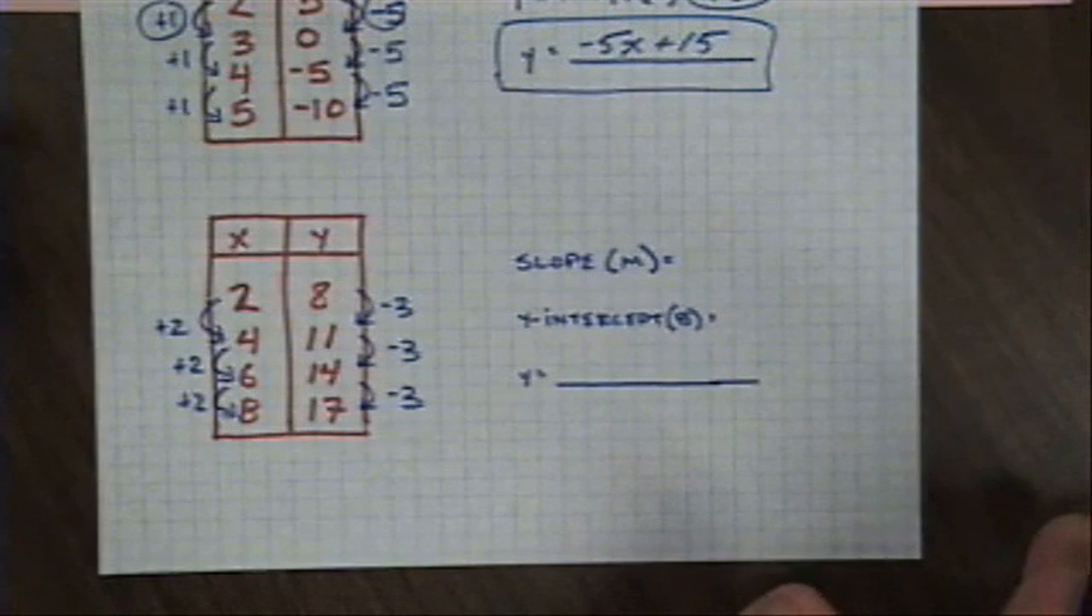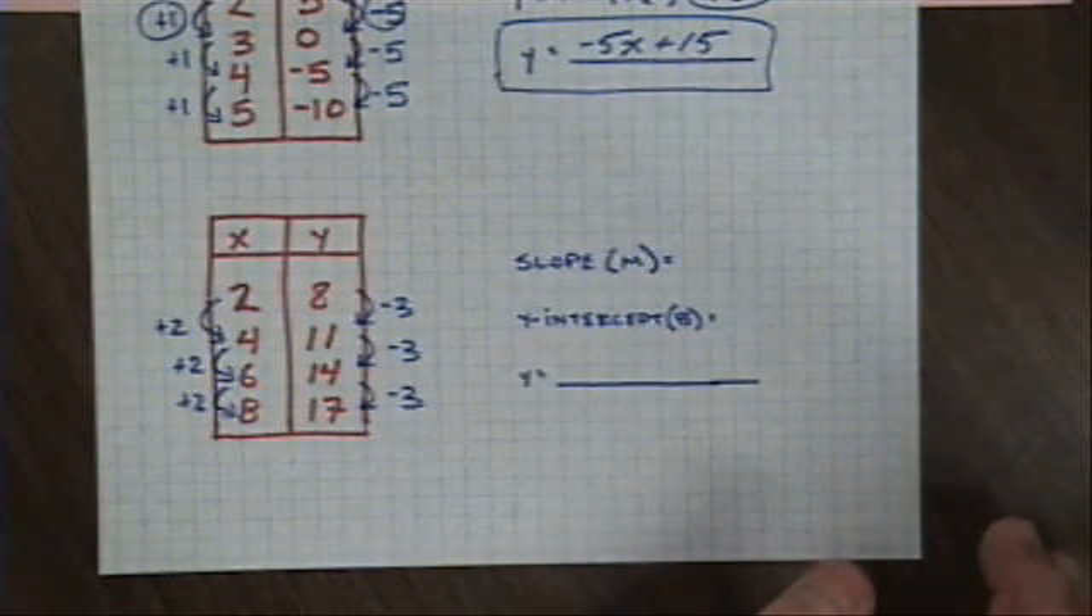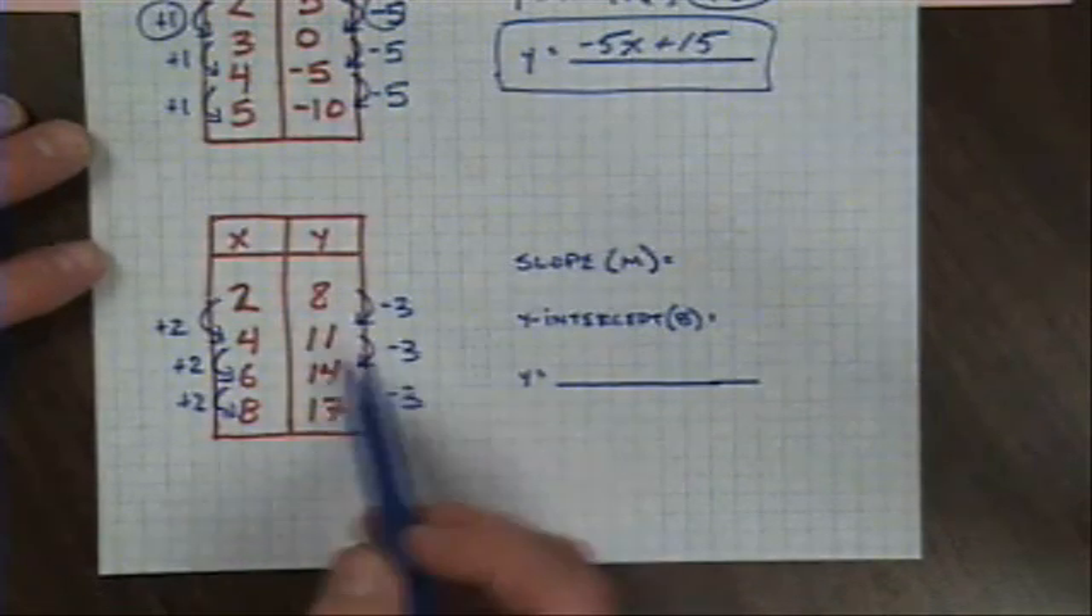And all of these equations will graph as perfectly straight lines. Nice consistent changes. When you move on into algebra 1 and potentially into algebra 2, you'll start to see things that change not by the same amount every time, but by differing amounts. And those often times will curve when you graph them. That's not what we're doing here, so let's get back to it.